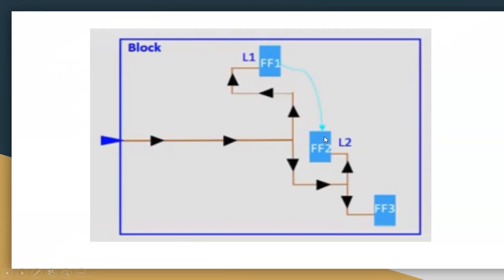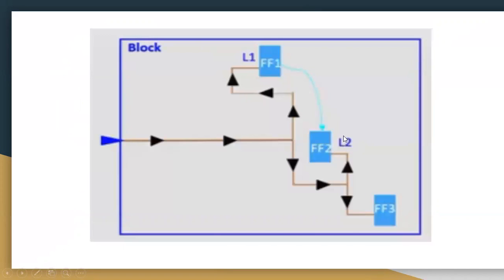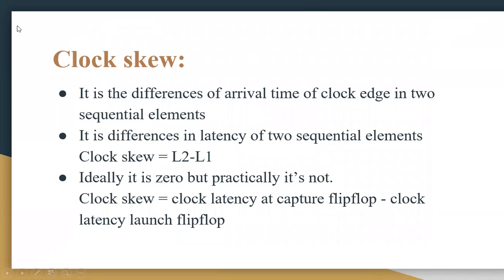The clock skew is nothing but the time at which the clock arrived at FF1 minus FF2. That difference is nothing but clock skew — the difference in the latencies, which are the delays of the two sequential elements. Clock skew equals L2 minus L1.